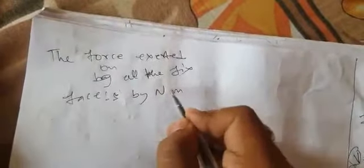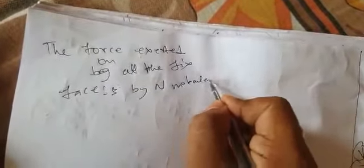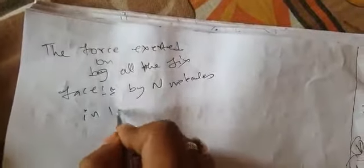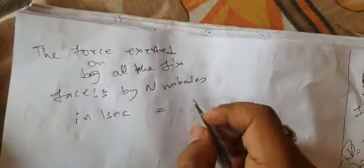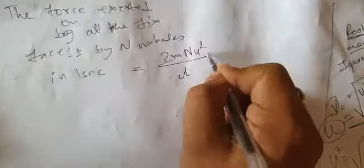The force exerted on all the six faces by N molecules in one second will give me the value 2mnU square by L, where U is root mean square velocity.